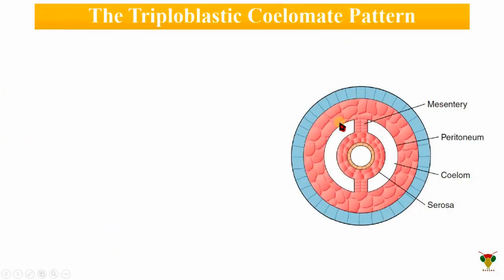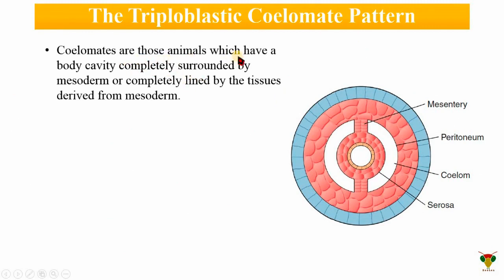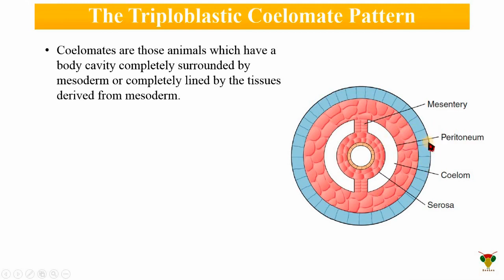Next is the triploblastic coelomate pattern. Coelomates are those animals which have a body cavity completely surrounded by or completely lined by tissues derived from the mesoderm. The body cavity present in coelomates is completely surrounded by mesodermal cells — the blue is the ectodermal cells, next are the mesodermal cells, and on the inner side are the endodermal cells. The body cavity is totally covered by mesodermal cells, so it is considered a true coelom.